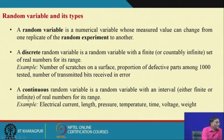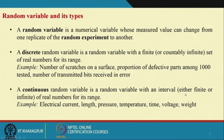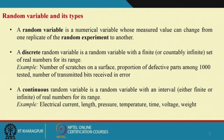A continuous random variable is a random variable with an interval — either finite or infinite — of real numbers for its range. Examples include electrical current measured in amperes, which could be 50.5, 50.05, or 50.005; length of a rod; pressure exerted on a body; temperature; time taken to complete work; voltage in an electric circuit; and weights.